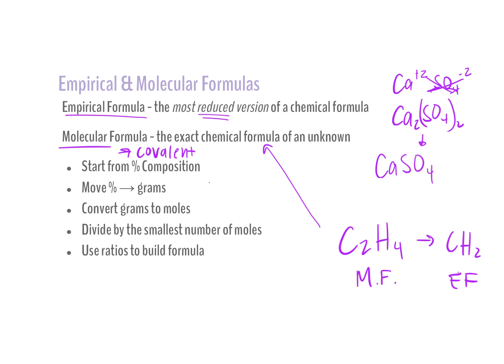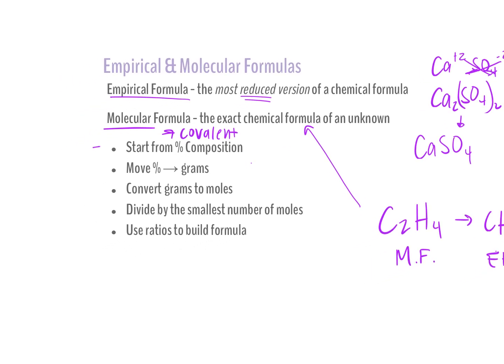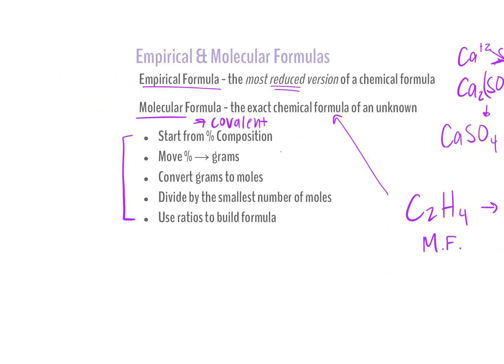We're going to start with empirical formulas. Here are the steps to build an empirical formula. In most cases, we'll start from a compound's percent composition — something like 36% carbon, 28% hydrogen, 15% oxygen. It will start with a percent composition.